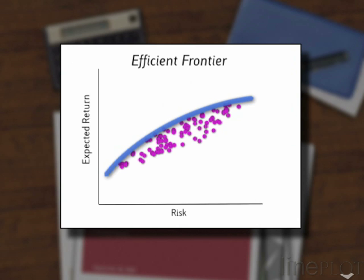We must answer difficult questions such as: how much return am I willing to give up to have greater liquidity? Once this is done, we must choose among the efficient portfolios by assessing our risk tolerance, usually by a subjective, rules-based risk questionnaire. There is no underlying theory and often little rigour behind the way that these risk surveys are processed.